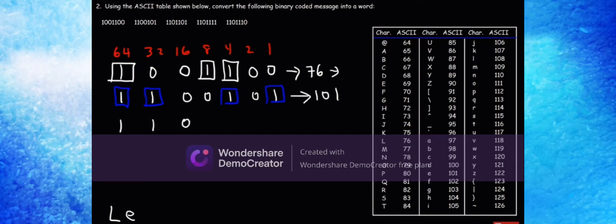Let's move on to the next one: 1101101. We have 64, 32, 8, 4, and 1. So 64 plus 32 plus 8 plus 4 plus 1 equals 109, and 109 corresponds to the letter M. You can probably figure out the word now.